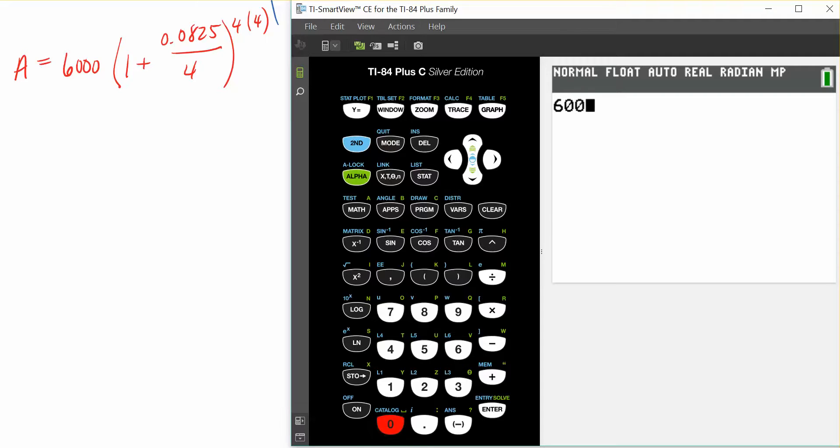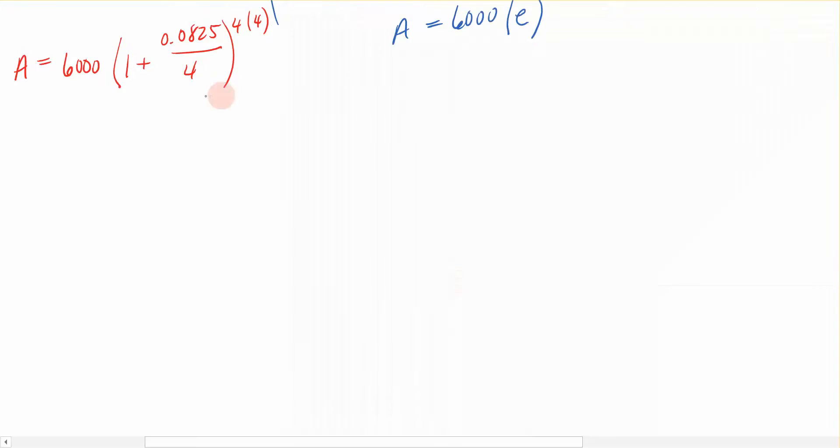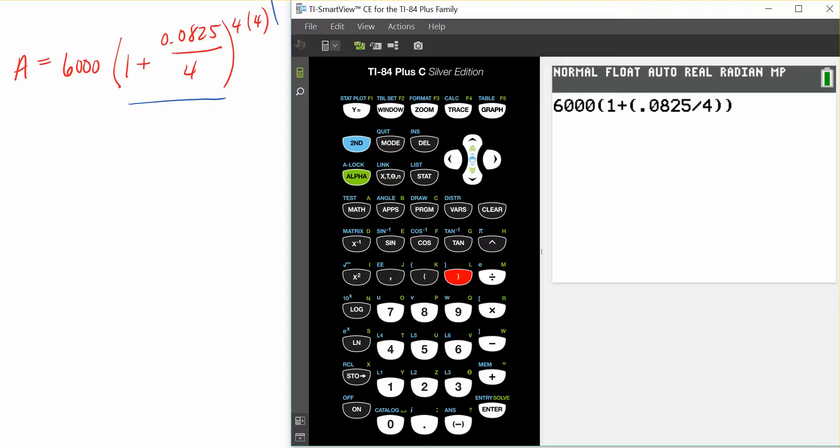I have 6,000 and I'm going to multiply that times one plus this fraction right here. So I'm going to surround that interior fraction by parenthesis. This is .0825 divided by 4. Close the parenthesis for that fraction, close the parenthesis for the 1. So that was this right here. Now I'm going to raise it to the 16th power, because I can multiply 4 times 4 in my head. And I get a value of $8,317.84 if I were to compound quarterly at the given interest rate.